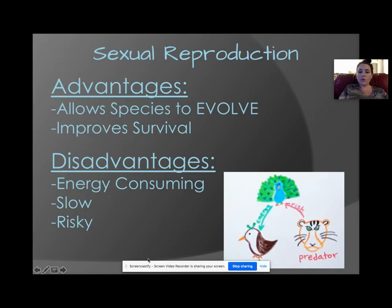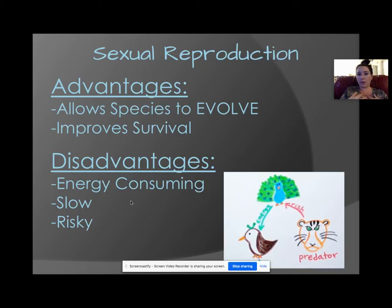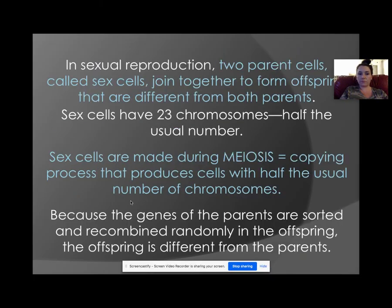Now let's talk about sexual reproduction. Advantages include allowing species to evolve and improve survival. Disadvantages are that it's energy-consuming, slower, and riskier. It's just a very different process — for example, in humans it's obviously not a fast process.